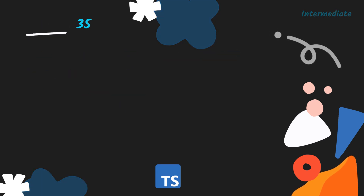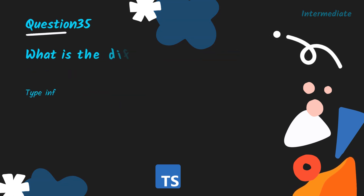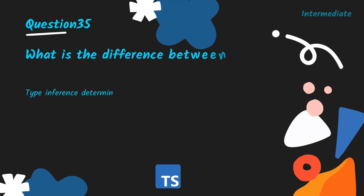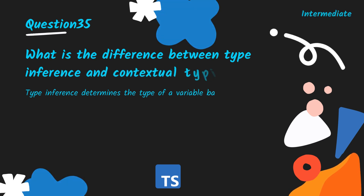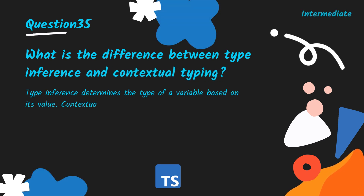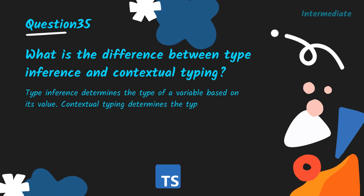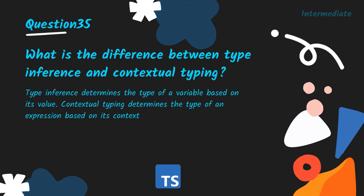What is the difference between type inference and contextual typing? Type inference determines the type of a variable based on its value. Contextual typing determines the type of an expression based on its context and location in the code.